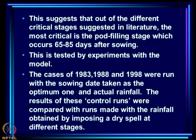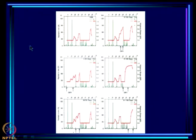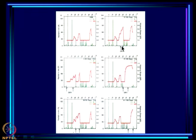In addition to the control runs, we made runs by suppressing rain at different stages, that is, imposing dry spells at different stages. For 1998, the control run is shown, and dry spells were imposed: in the first month after sowing, then at subsequent stages, and finally at the pod filling stage.